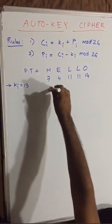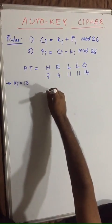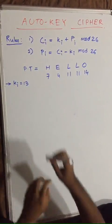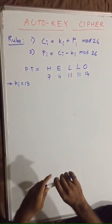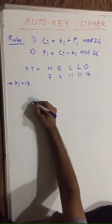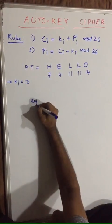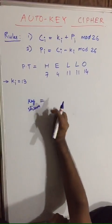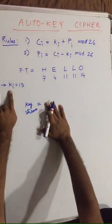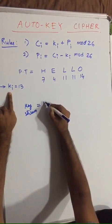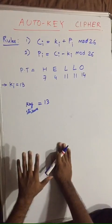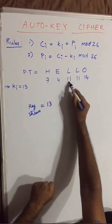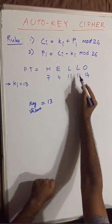Let us start and create our key stream first, because to convert the plaintext into ciphertext in auto-key cipher we would be needing a key stream. The key stream would be equal to whatever key is given to you. First of all, place it over here. Now what you have to do is just keep on placing the digit values of the given plaintext.